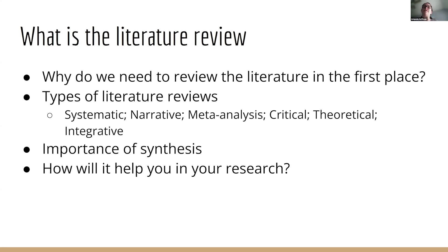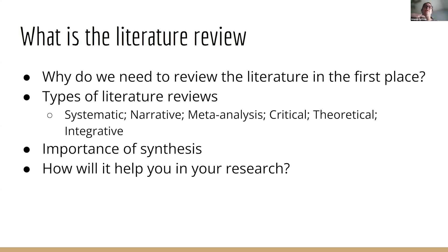There are different types of literature reviews. The one you'll do most often is a narrative literature review — really just going through the studies done on a topic and telling the story of your field and research question. A systematic literature review is a more in-depth process, really digging deep into your topic, and it uses the review of the literature to answer a specific question, whereas the narrative literature review is just telling the story.